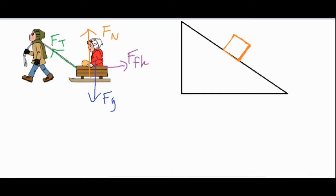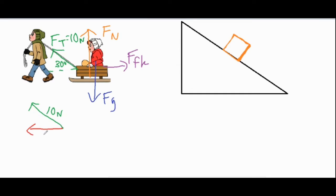Note that ft is the force of tension. Now we're going to need an angle here — if you're given a problem you'll get some kind of angle and a force, like 10 newtons, to be broken into components. You'd typically draw that triangle off to the side and label the x component ftx and the y component fty.